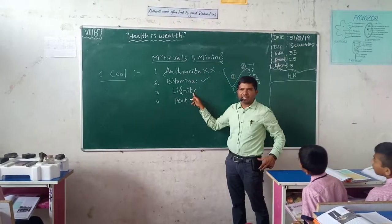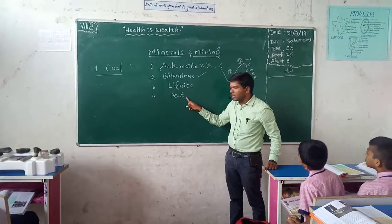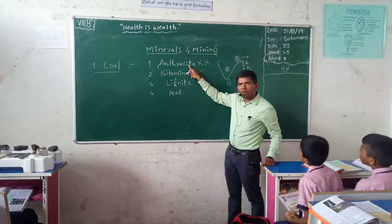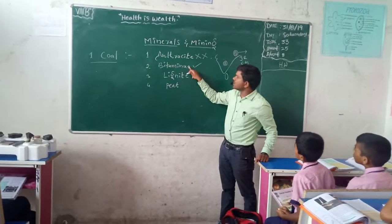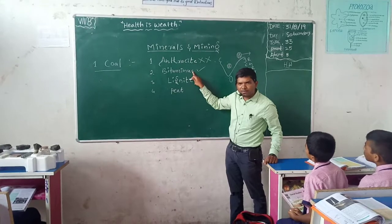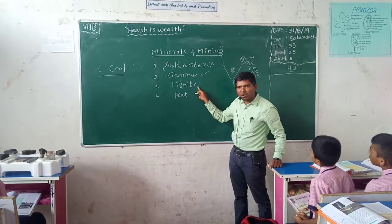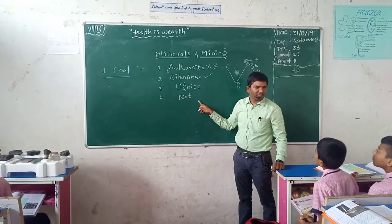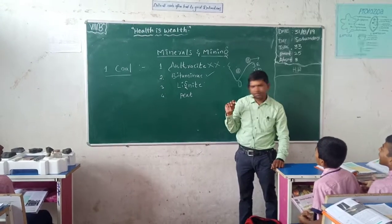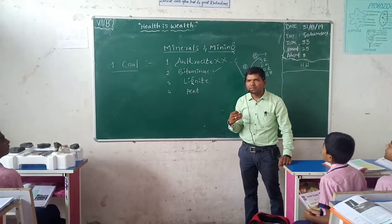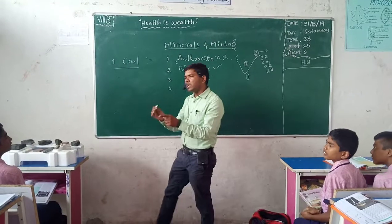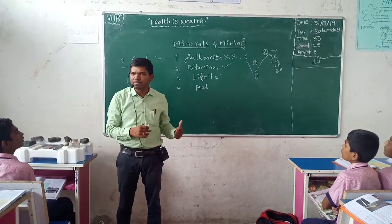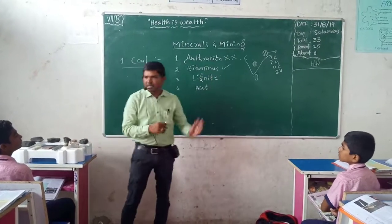Next is Lignite, and the last one is Peat. Anthracite is the highest quality coal, not available in India. Bituminous is second quality coal. Lignite is third quality coal. Peat is the least quality coal. So the kind of coal available in India is least quality.